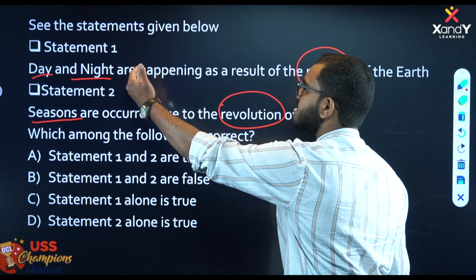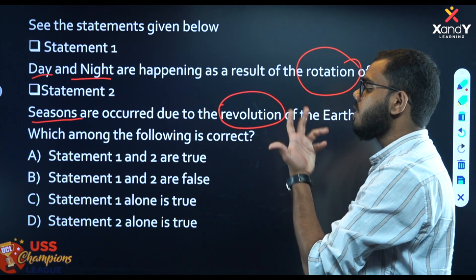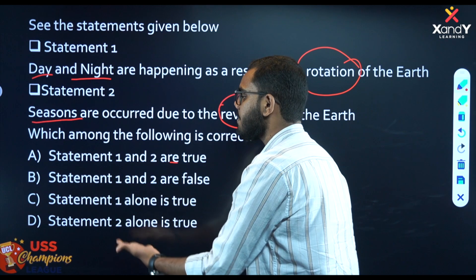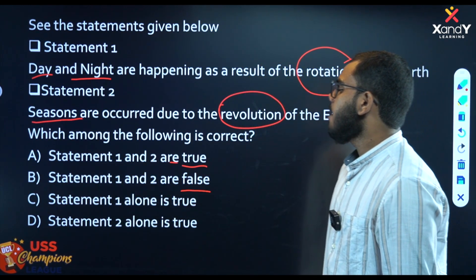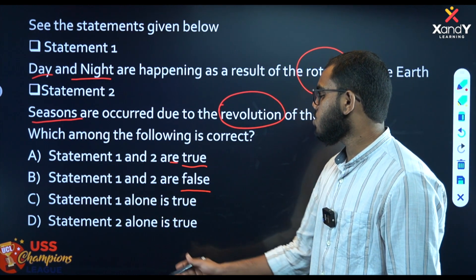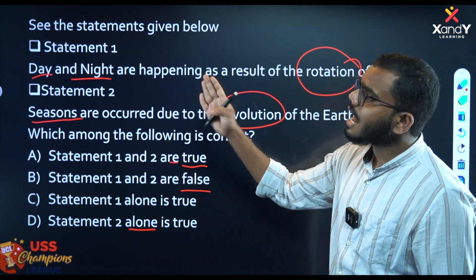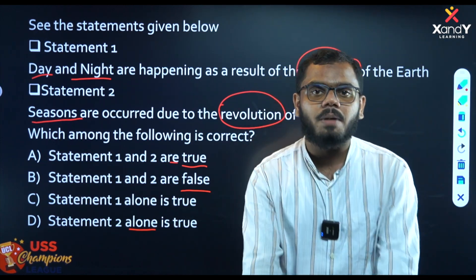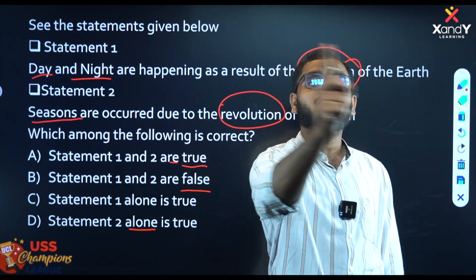The options are: Statement 1 and 2 are both true. Statement 1 and 2 are false. Statement 1 alone is true. Statement 2 alone is true. When we say the Earth is rotating, that is Statement 1, which is true.